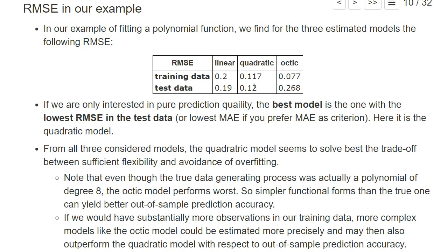But given the number of observations we have, the quadratic model basically best balances flexibility versus overfitting. Your model should be flexible enough, but not too flexible, to avoid overfitting. The linear model is a bit too little flexible, the octic model too flexible, the quadratic model has the best trade-off.